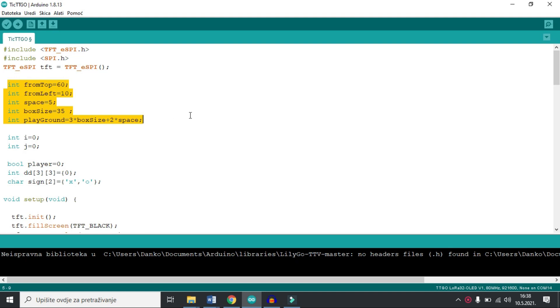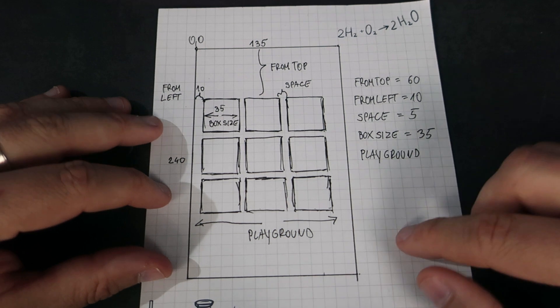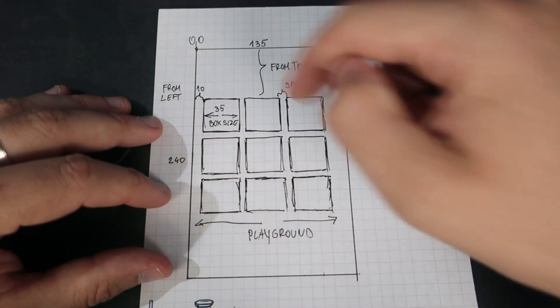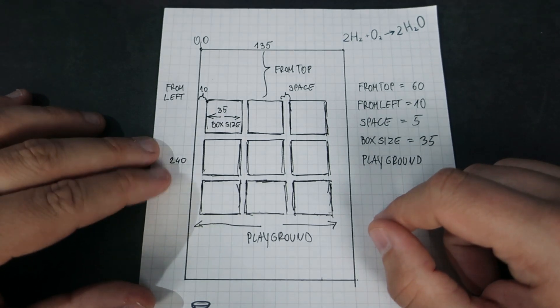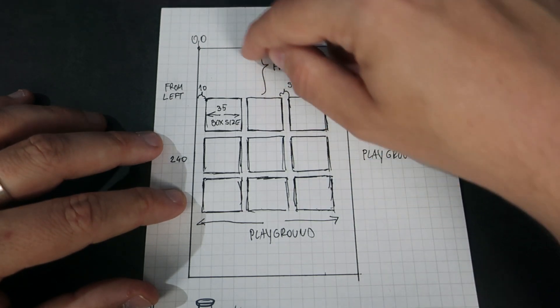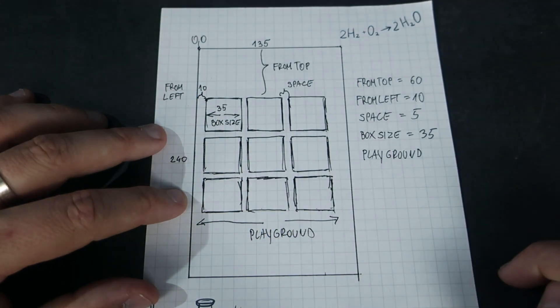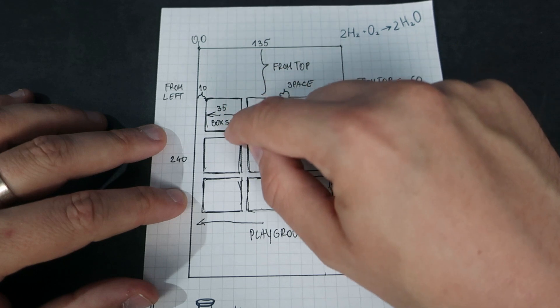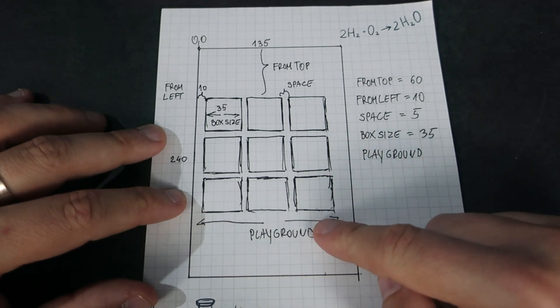In the first part I defined some variables: from_top, from_left, space, box_size, and playground. Here is a simple drawing. Our playground represents the TTGO T-Display screen which is 135 by 240 pixels. The variable from_top represents space between 0 and first row. From_left is 10 pixels. Box size is 35 by 35 pixels. Space between boxes is 5 pixels.